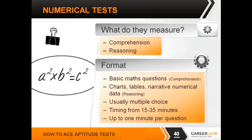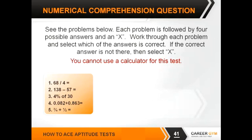Sometimes calculators are allowed, sometimes they're not — you can check this as part of the administration instructions. Typically for comprehension tests, the less complex ones, calculators aren't allowed. Each problem is followed by four possible answers and an X. Work through each problem and select which answer is correct, and if the correct answer is not there, select X — that's your 'none of the above' option. We'll sometimes put distractors in that look right but are off by a couple of decimal points or by a certain factor.